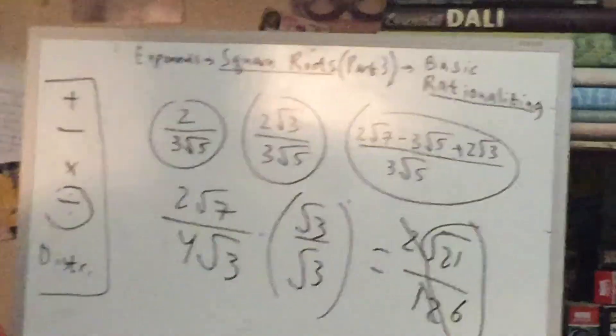For this one, you might just have more terms on the top, but the bottom will still work out to be without a square root.